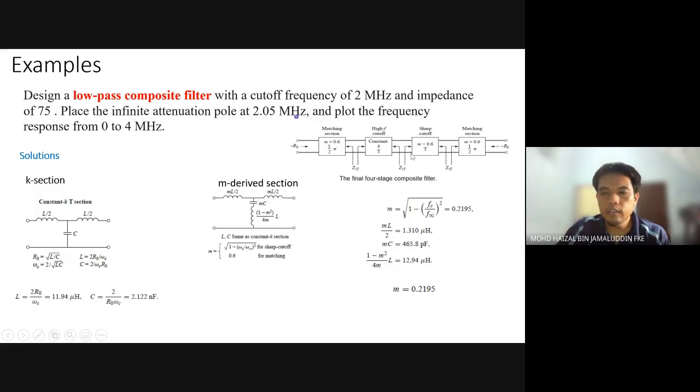Next, using the M-derived section, we derive based on the formula. We calculate M equal to square root of 1 minus Fc over F infinity to the power of 2, and we get M equivalent to 0.195. We include this value inside the M-derived section and are able to get the values in Henry and Farad for the inductor and capacitor.